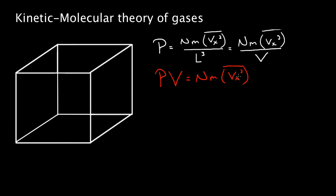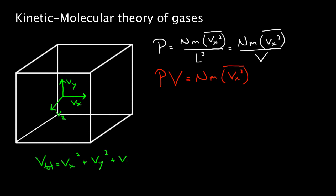But I don't just want to single out the x direction — there's also y and z. It would be better if this formula told us the total average squared velocity. If this is in the x direction, these particles also have velocity in the y direction and the z direction. So the total velocity squared equals Vx squared plus Vy squared plus Vz squared. That's the Pythagorean theorem in three dimensions. This equation also holds if I average everything.